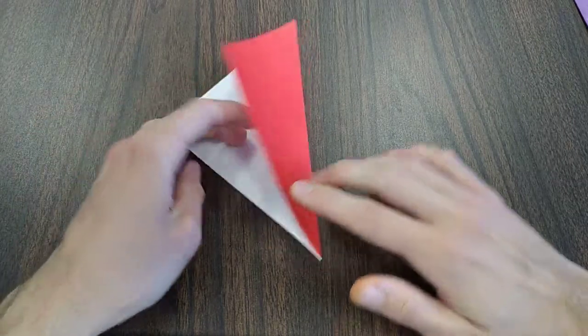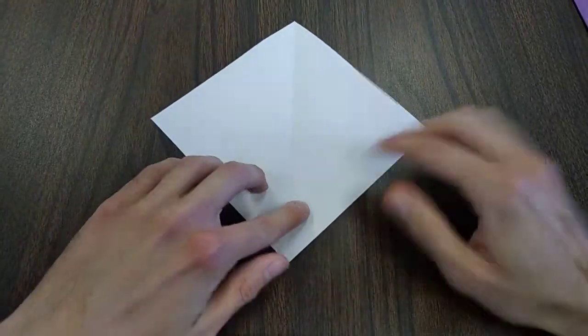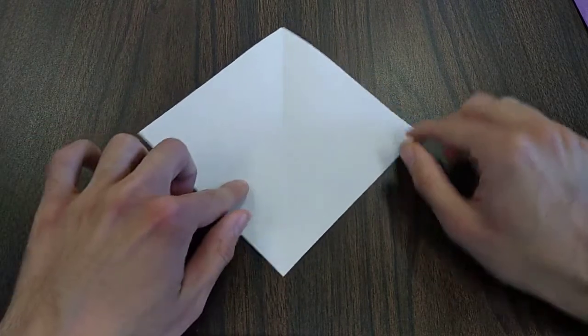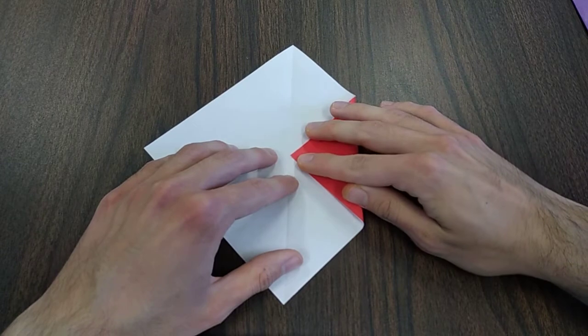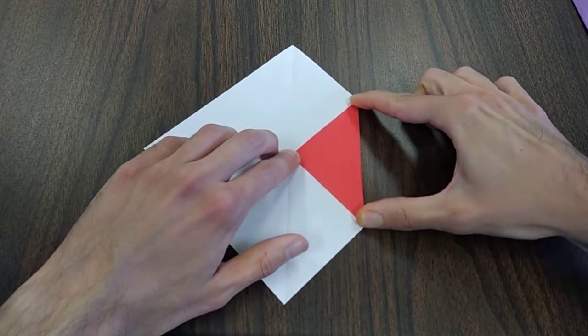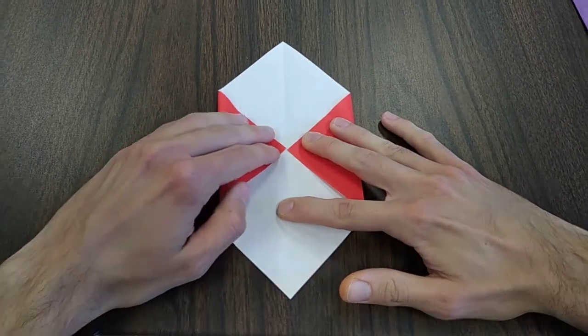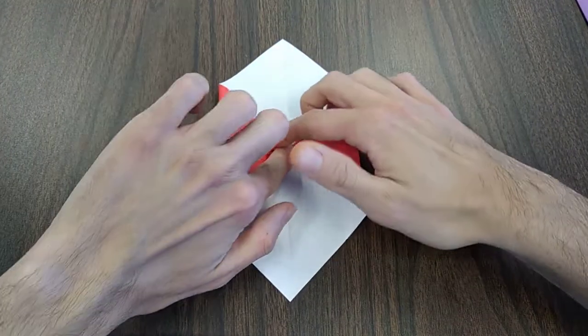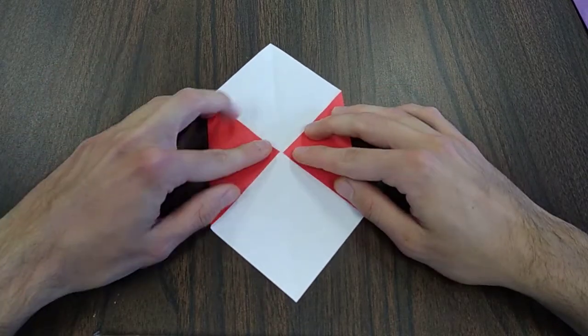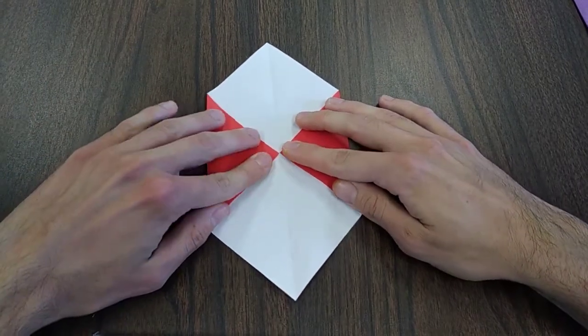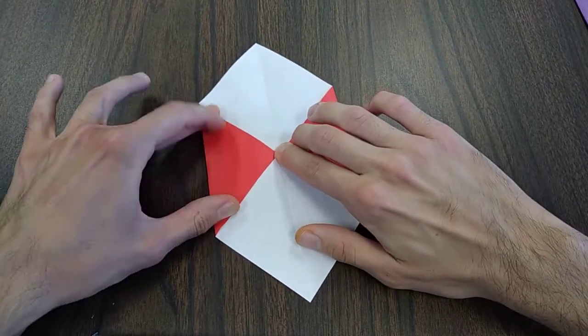Now let's undo that fold and we're going to fold the right and left corners so they meet in the center. There we go.